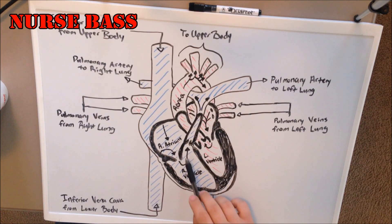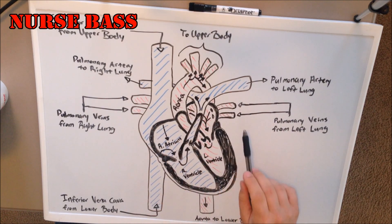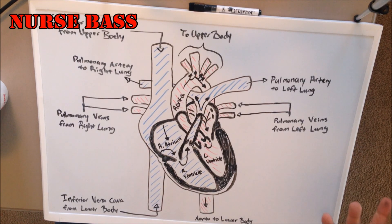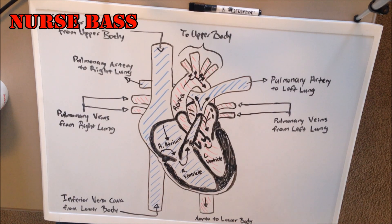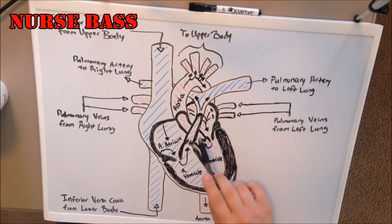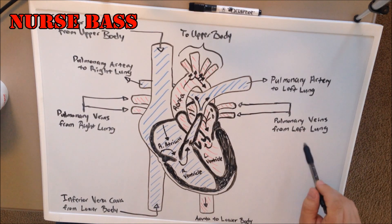The blood leaves the right ventricle via the pulmonary arteries to both the left lung and the right lung. It is here in the lungs where the blood becomes freshly oxygenated and gets rid of the waste product, carbon dioxide, into the lungs. Whenever you inhale, oxygen diffuses into the blood — those heme molecules on the erythrocytes, on the hemoglobin, pick up the oxygen and dump off CO2. And so whenever you exhale, that's why you exhale carbon dioxide. The blood goes into the lungs, becomes oxygenated, and then returns via the pulmonary veins.